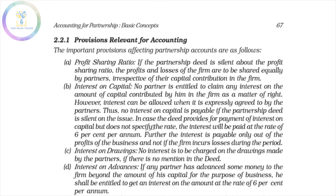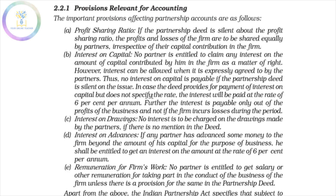Next are the Provisions Relevant for Accounting. The first is the Profit Sharing Ratio. If the profit sharing ratio is not specified in the partnership deed, we assume profits are shared equally. For Interest on Capital: if the deed provides for payment of interest on capital but does not specify the rate, the interest will be paid at the rate of 6% per annum.